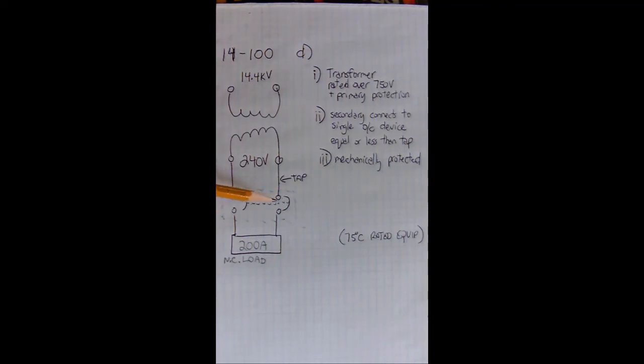It has to be just one overcurrent device. Carrying on with that rule, it says that overcurrent shall not exceed the ampacity of the conductors in the circuit. What they're really saying there is this overcurrent device cannot exceed the tap. The tap must be bigger or equal to this overcurrent device, and in the case here I'm drawing a breaker.